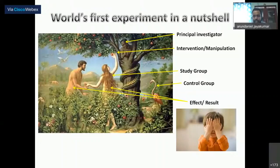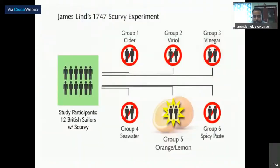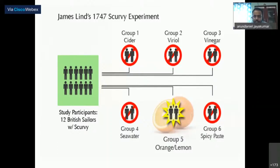James Lind, a British naval surgeon, took 12 sailors on a cruise. They all became weak, anemic, and started bleeding from their gums — scurvy. He divided them into six groups and gave different interventions: cider, vitriol, seawater, orange or lime juice, and spicy paste. To his surprise, group five — the Limey's group given citrus — responded best. This famous experiment was conducted in 1747 and is known as the scurvy experiment.